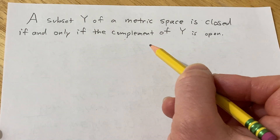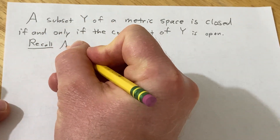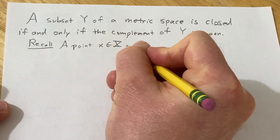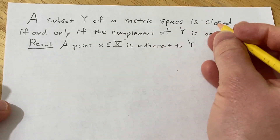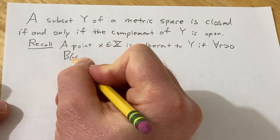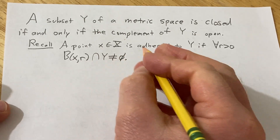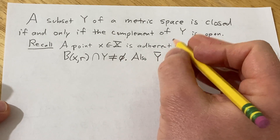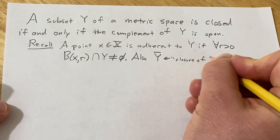First, let me refresh your memory on a few definitions we're going to need. A point X in a metric space capital X is adherent to Y if for all R greater than zero, the open ball centered at X of radius R intersected with Y is non-empty. The set Y-bar is called the closure of Y, and it is the set of all points that are adherent to Y.